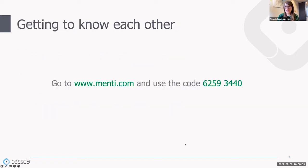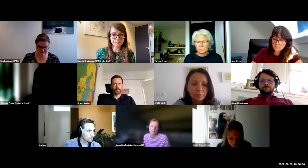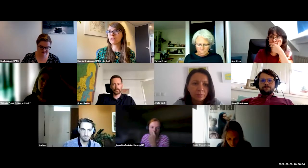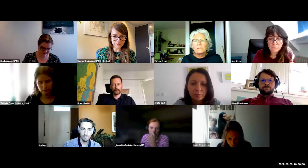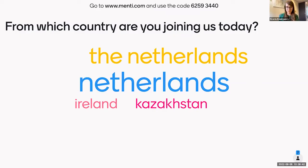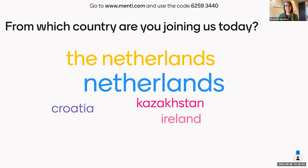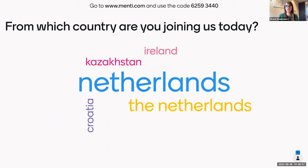It would be nice to get to know each other a little bit. We've prepared a short Mentimeter questionnaire — the number is different from the one in the presentation we uploaded, so if you have that one, please disregard it and go to this one. You can use mentimeter.com and use the number 62593440. I'm switching screens now so we can go to the Mentimeter. Hopefully you should now be able to see my screen.